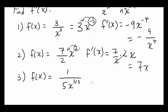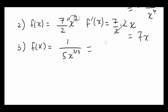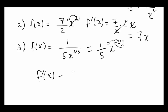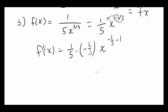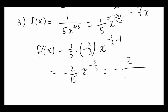The last one — let's rewrite this one too: 1 fifth times x to the negative 2 thirds power. So f prime of x is going to be — bring this down to the front — 1 fifth times negative 2 thirds, times x to the negative 2 thirds minus 1. That's going to be negative 2 fifteenths times x to the negative 5 thirds, also written as negative 2 over 15 times x to the negative 5 thirds.